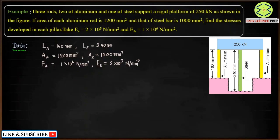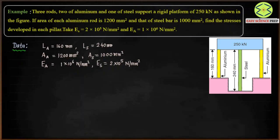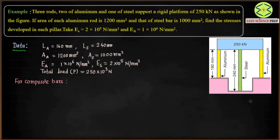Looking at the problem again: the overall load of 250 kN is shared by all three bars. We assume that the block carrying the load remains horizontal, so whenever it deforms, it remains horizontal. Therefore, the deformation in each rod is going to be the same. Since the overall load is shared by all bars and they undergo the same deformation, this is a system of composite bars.